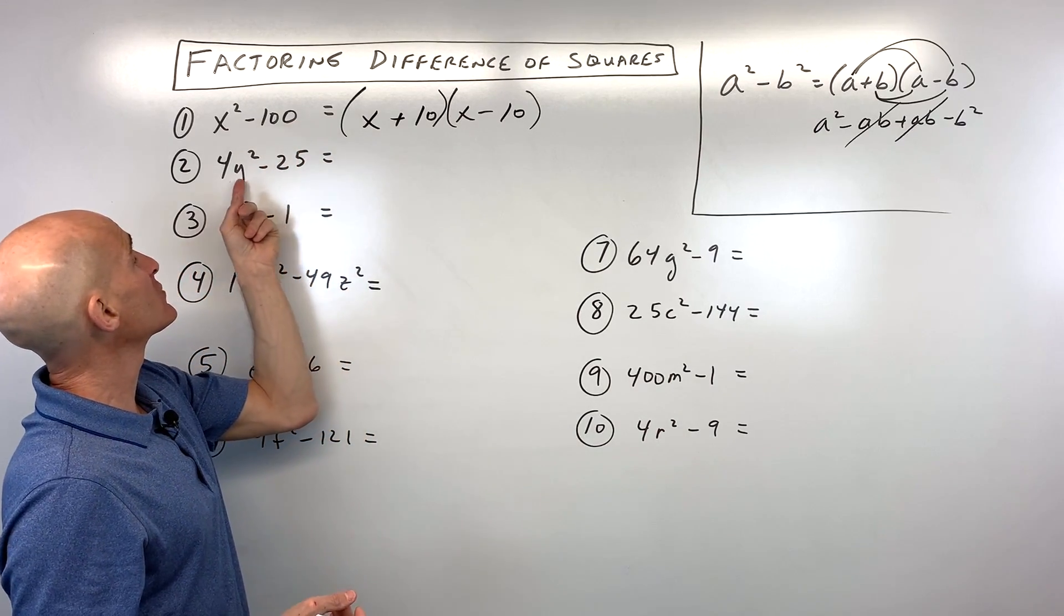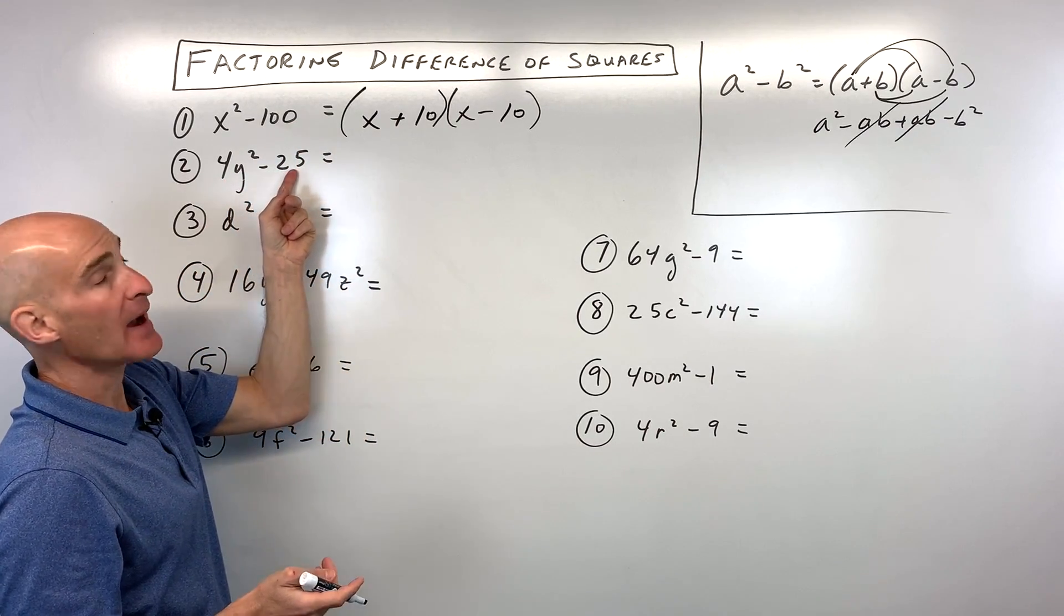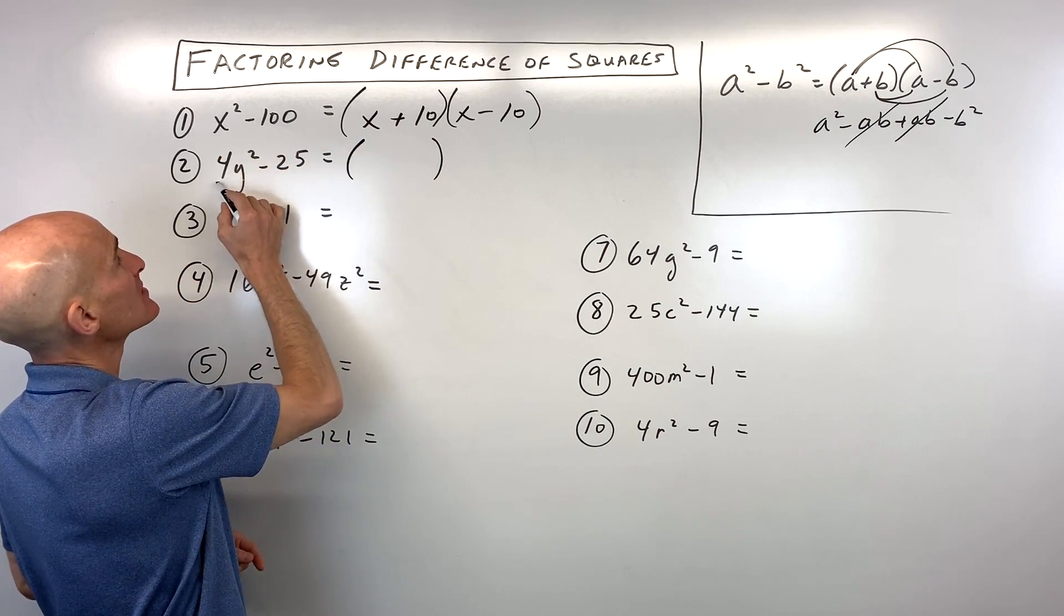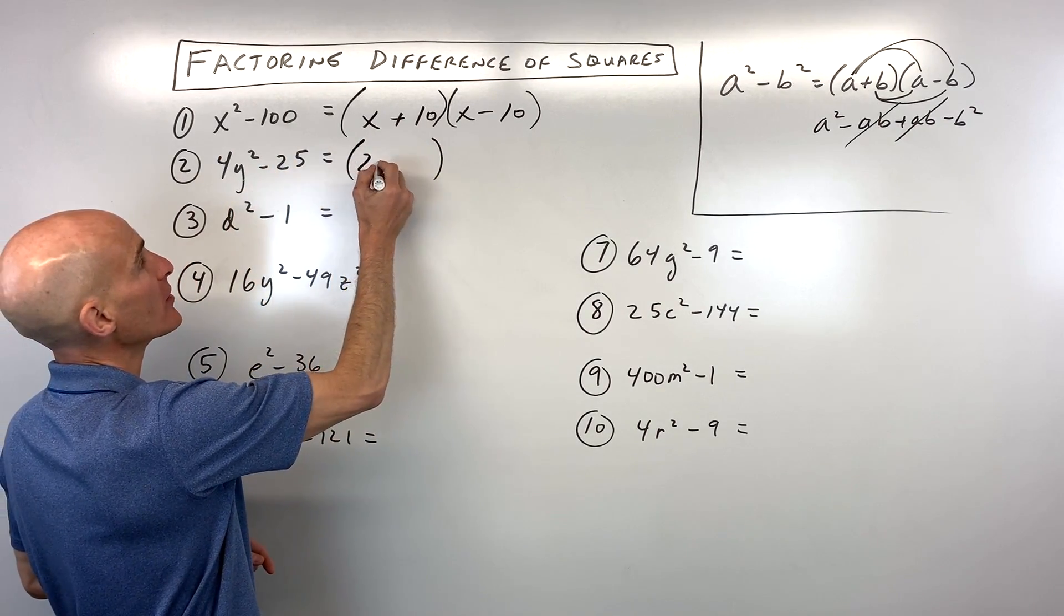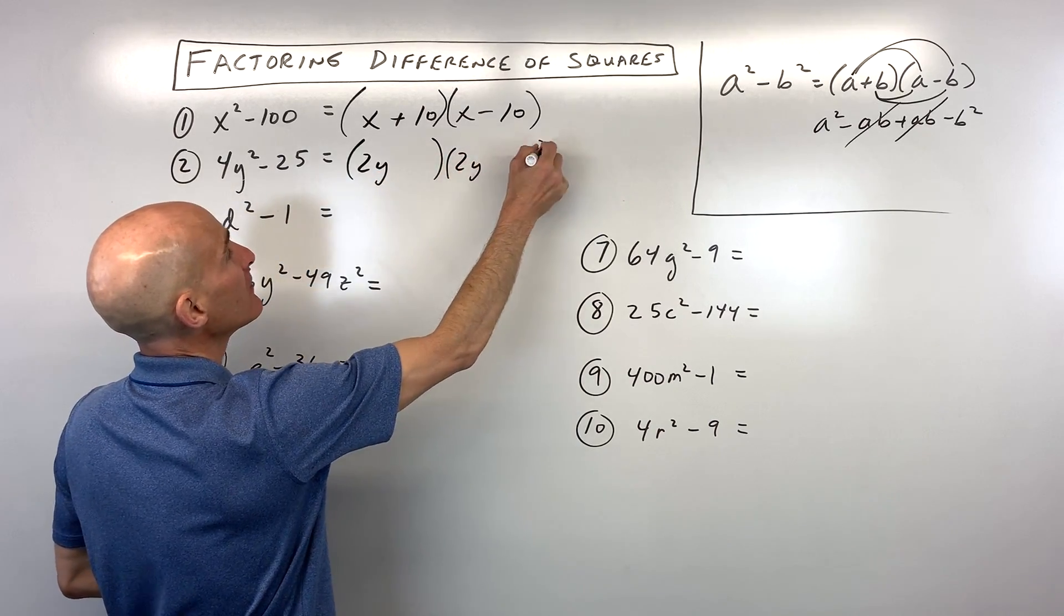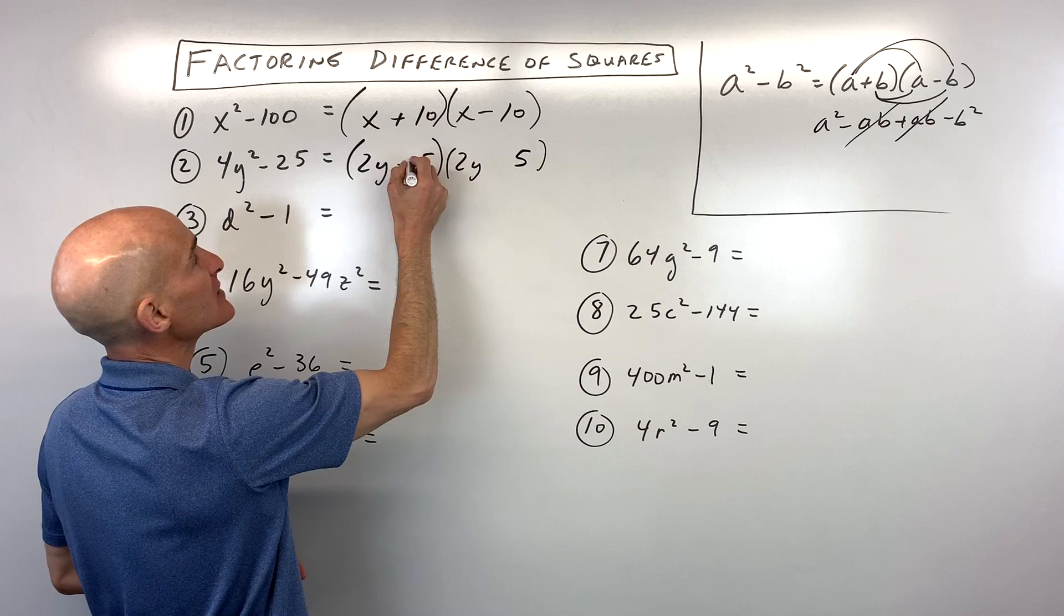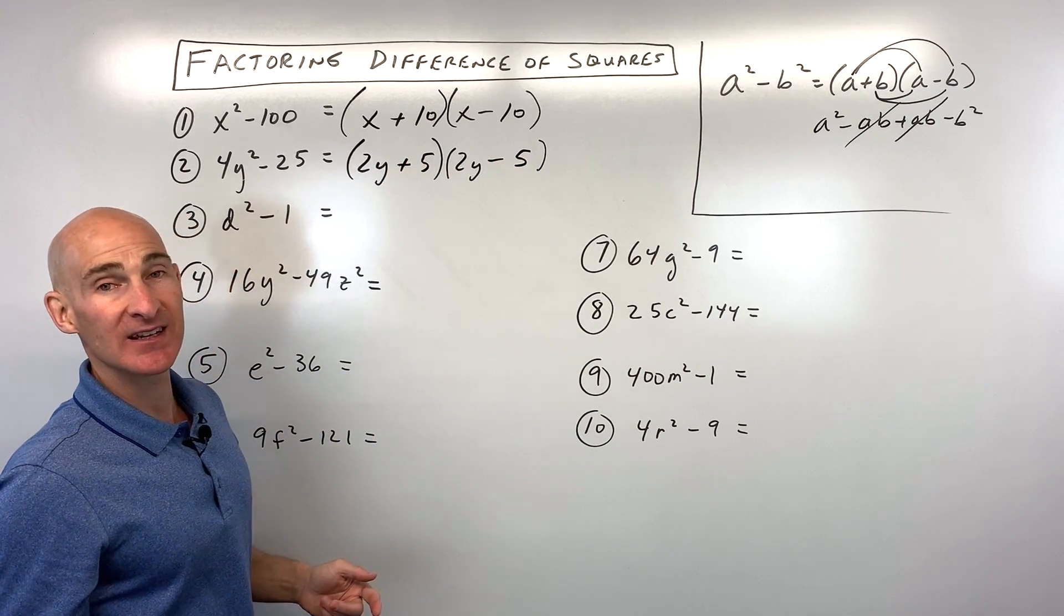Let's go to number two. What do you think for this one? 4y squared minus 25. So what I want to do is, is this a perfect square? What times itself is 4y squared? That's going to be 2y. What times itself is 25? That's going to be 5. And I just make one of these adding, one subtracting. And you got it.